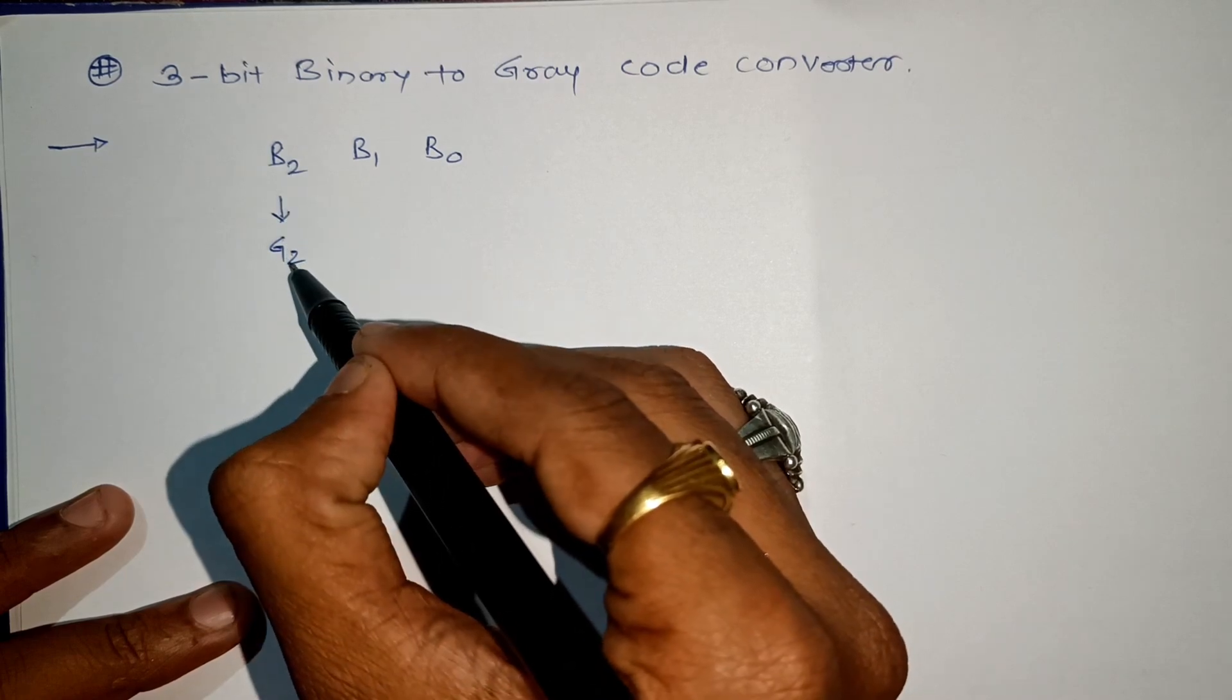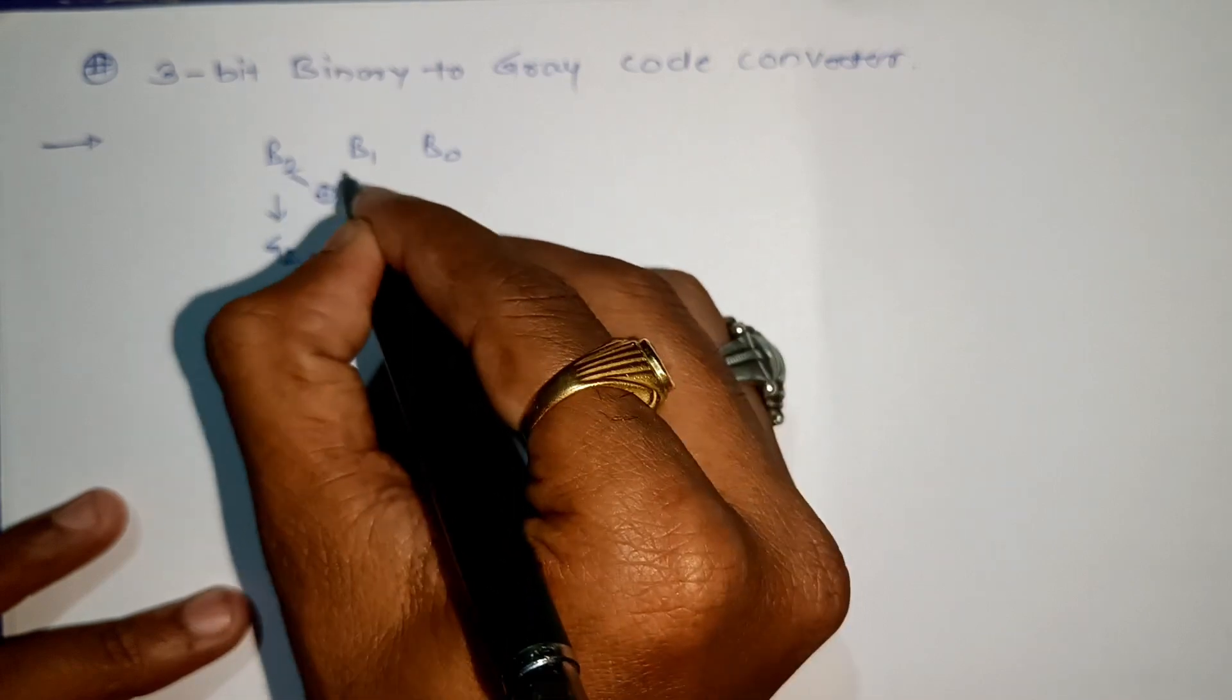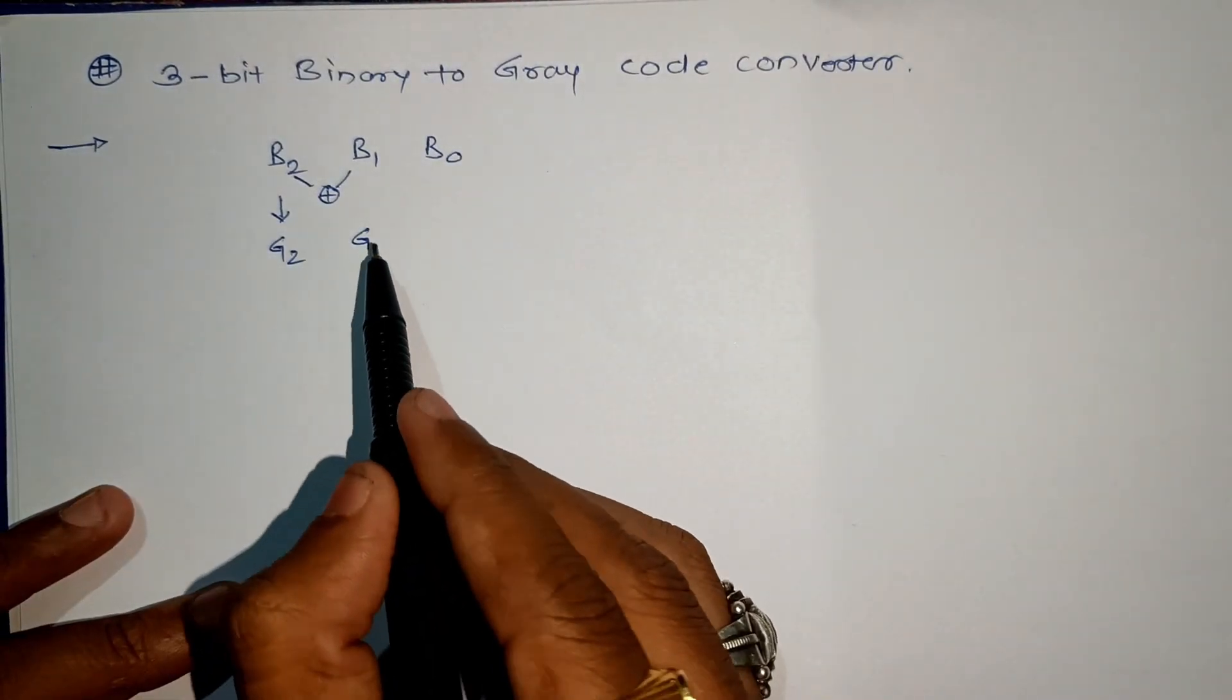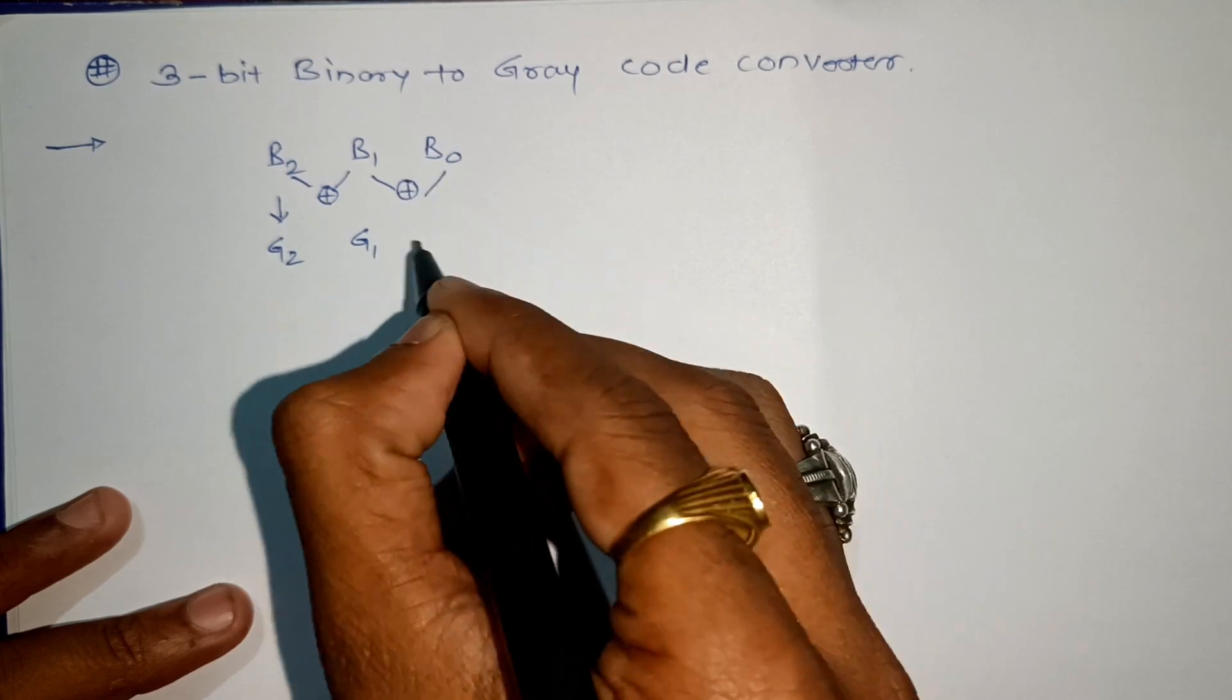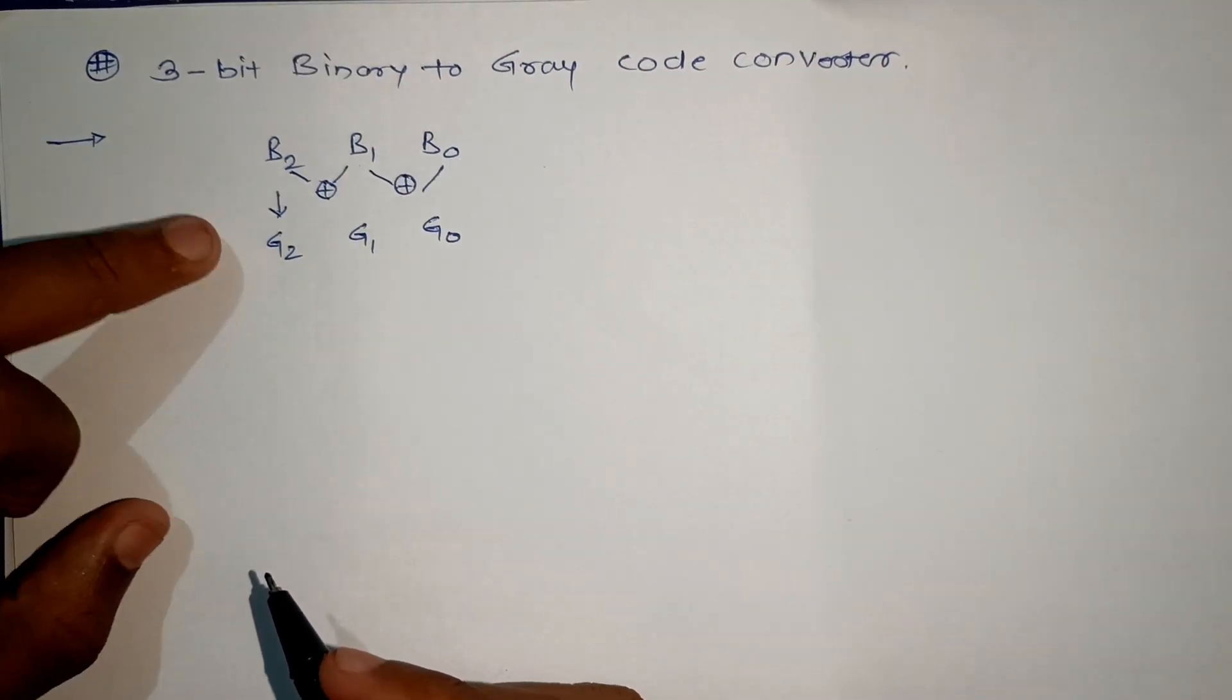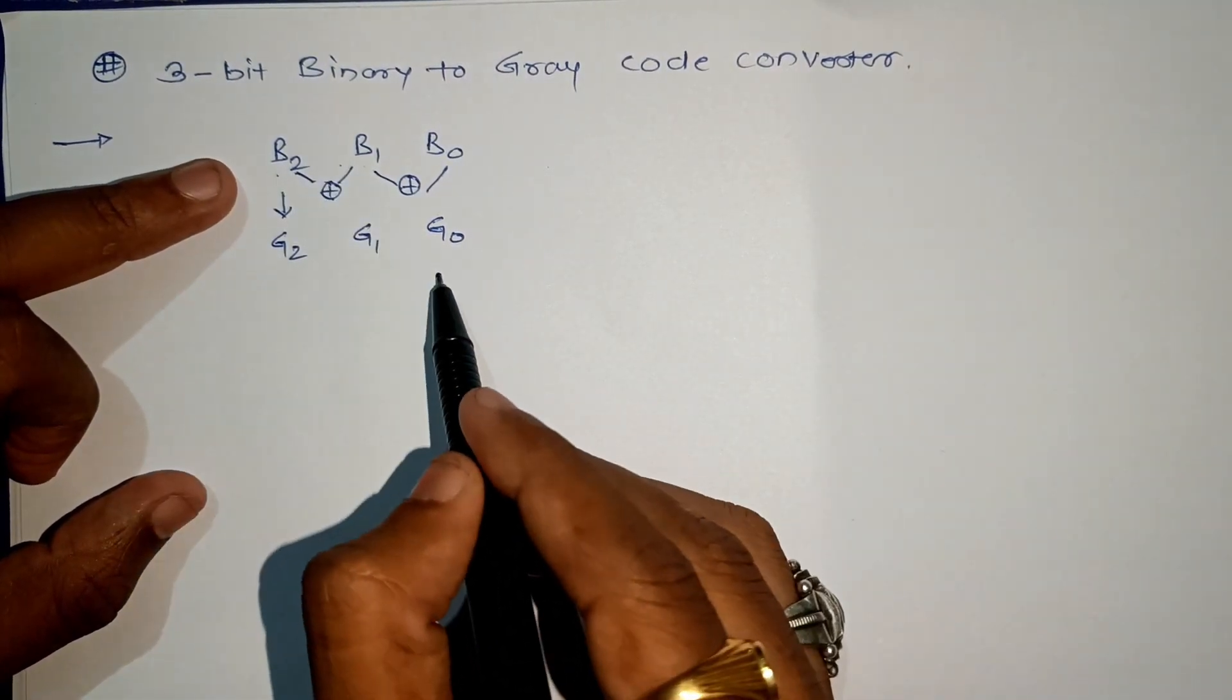The MSB bit is equal to the MSB bit of gray code. The remaining terms: when I XOR between B2 and B1, I will get G1. Similarly, when I XOR these two terms, I will get G0. So G2 equals B2, G1 equals B2 XOR B1, and G0 equals B1 XOR B0.